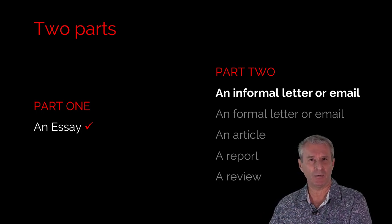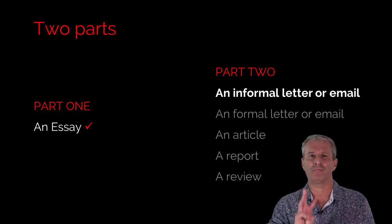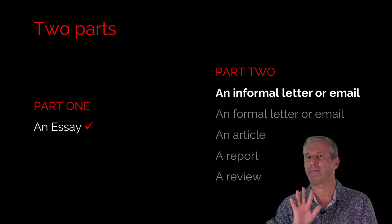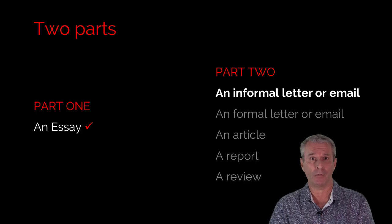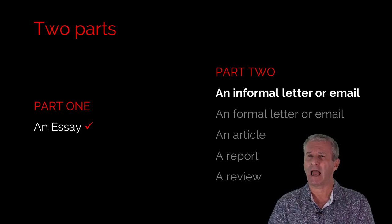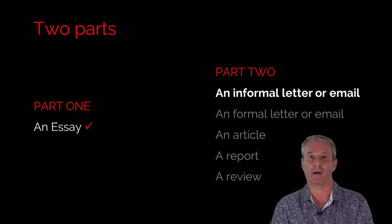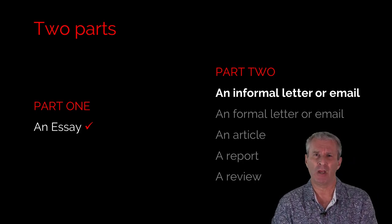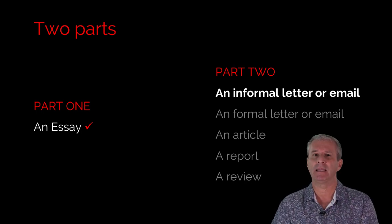Now let's go to Part 2. In this part you have a choice of 3 questions. These questions are selected from 5 different writing styles: a review, a report, an article, and 2 different styles of email or letter — a formal or an informal piece of writing. In order to get good marks in the exam you need to know the difference between formal writing and informal writing.